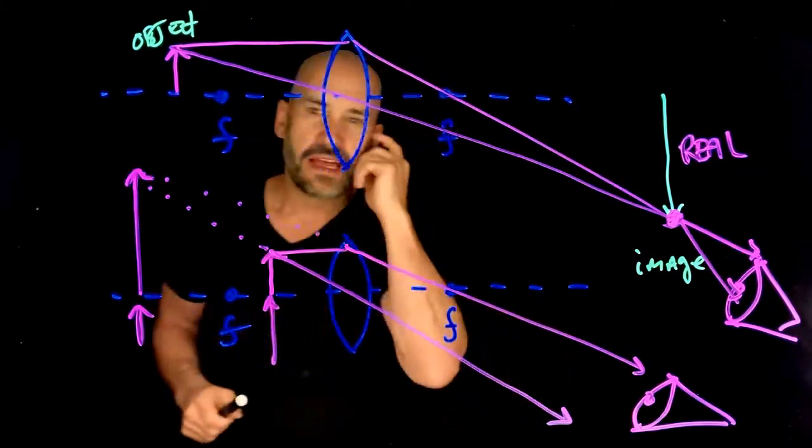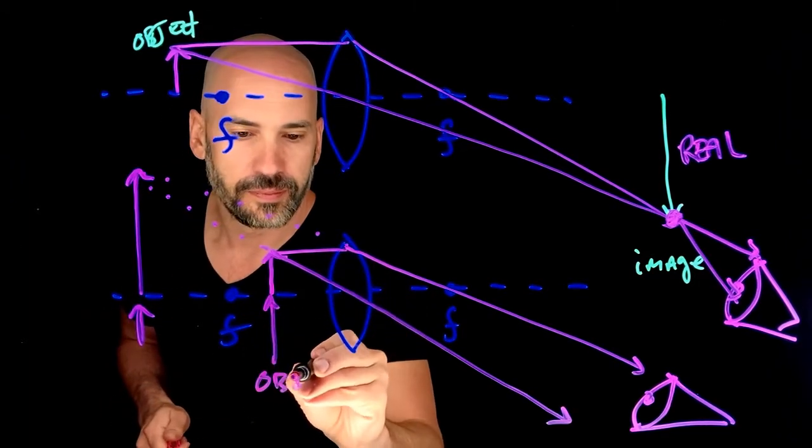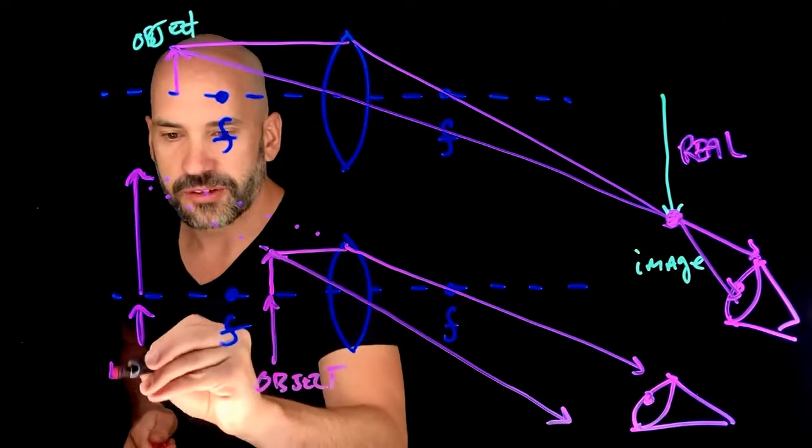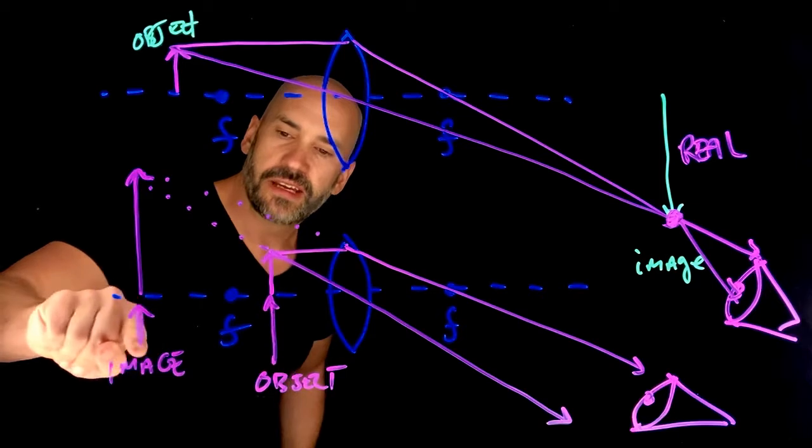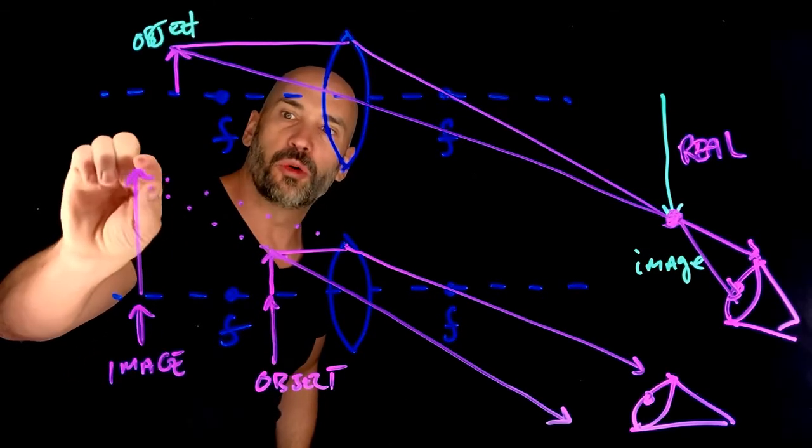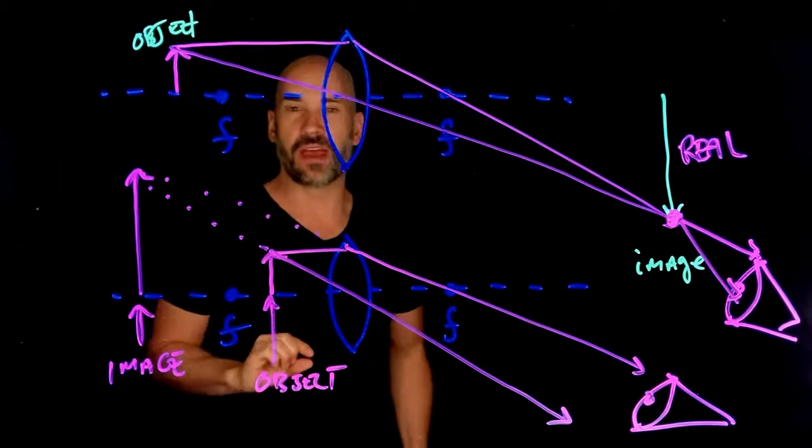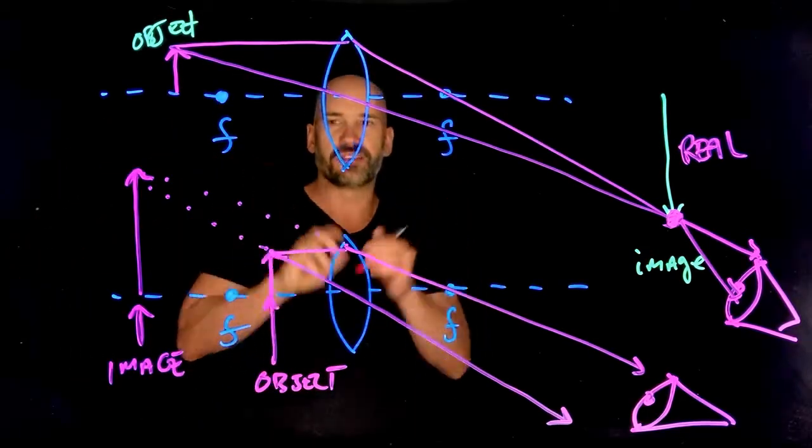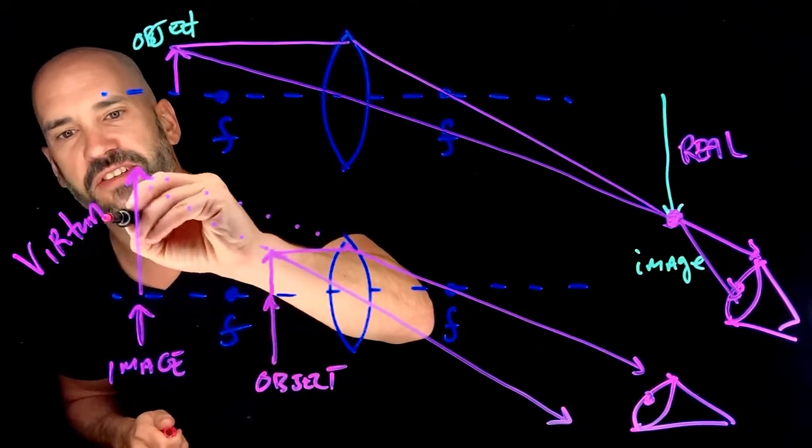And so notice this, so this is the object and this is the image. This image isn't actually formed by actual rays of light converging at that point. It just looks like it. So that's why we call it virtual.